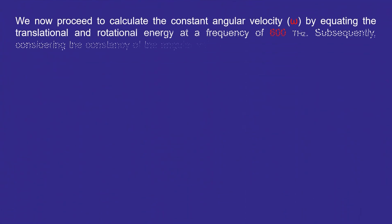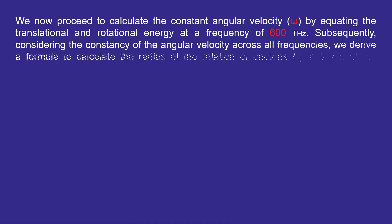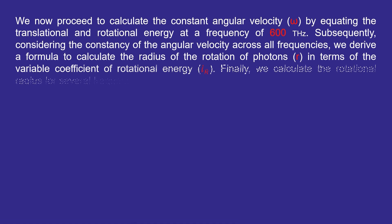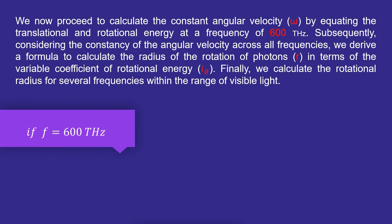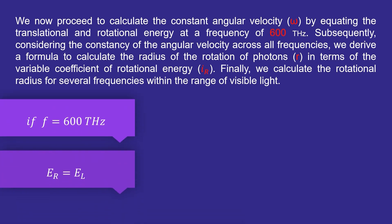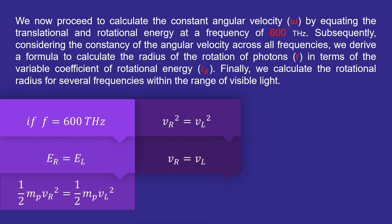We now proceed to calculate the constant angular velocity by equating the translational and rotational energy at a frequency of 600 terahertz. Subsequently, considering the constancy of the angular velocity across all frequencies, we derive a formula to calculate the radius of the rotation of photons r in terms of the variable coefficient of rotational energy i of r.